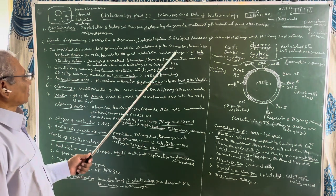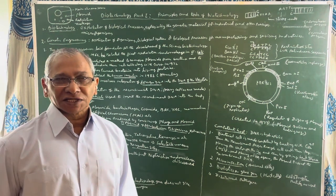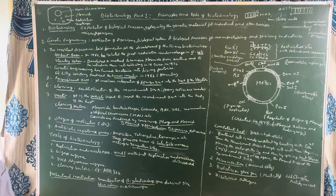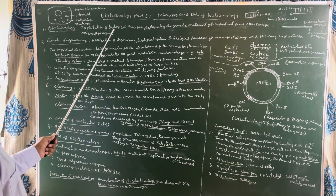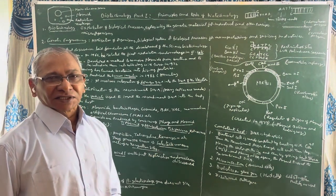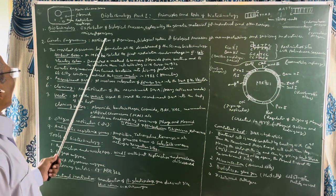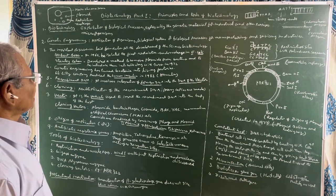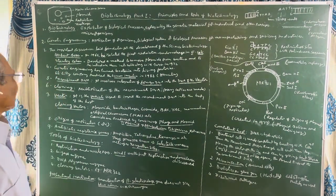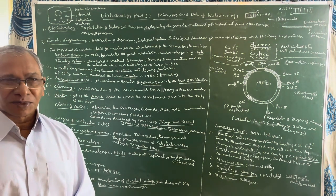Today I am taking up the topic biotechnology part 1: principles and tools of biotechnology. Biotechnology is a recent branch of science having many applications in different fields. Biotechnology means the exploitation of biological processes, especially the genetic material, for industrial and other purposes. Genetic engineering is a branch of biotechnology and is the application of organisms, biological systems, and biological processes for manufacturing and servicing industries, producing various products on an industrial basis for the benefit of mankind.